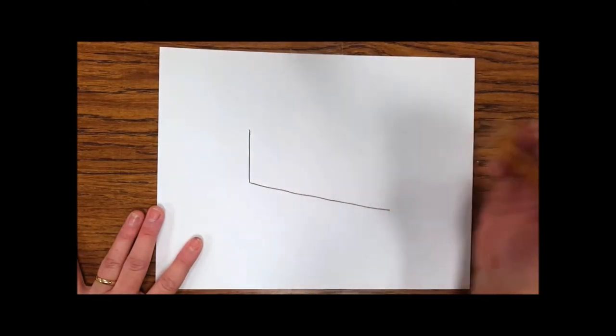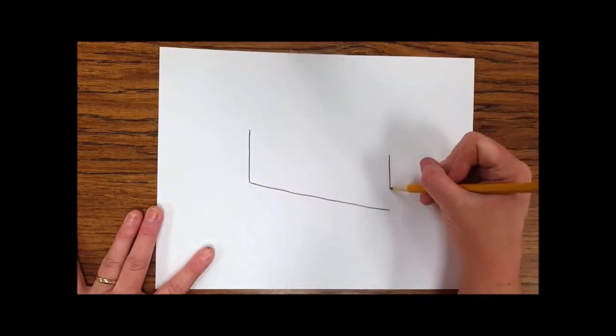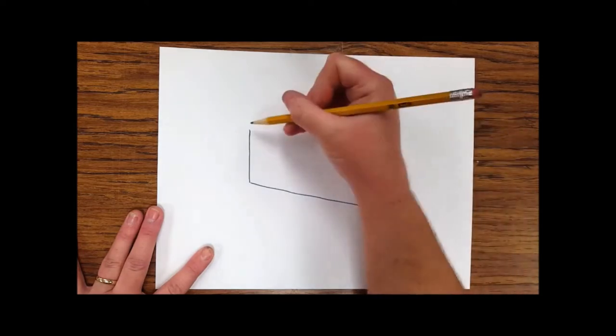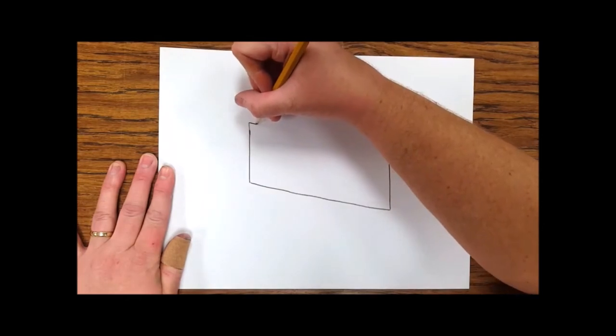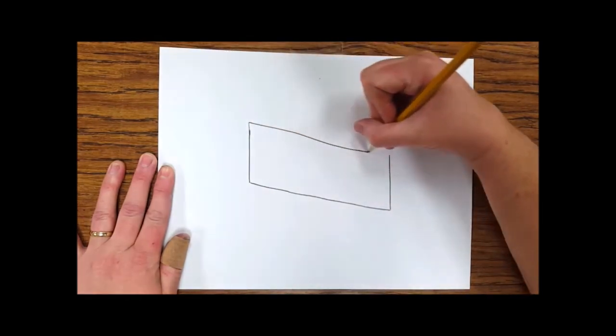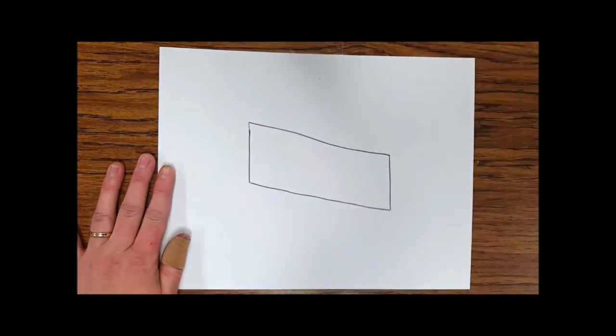About the same size as the first one, I'm going to draw another short vertical line. Then I'll connect them with a long diagonal line that goes parallel to the first one. This will be the front side of our slice.